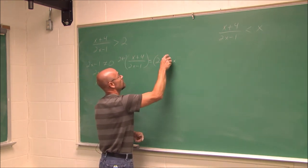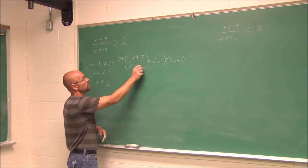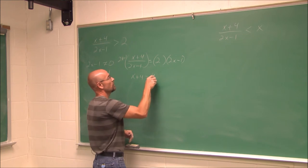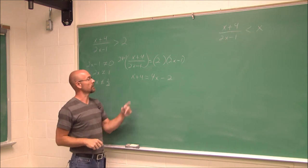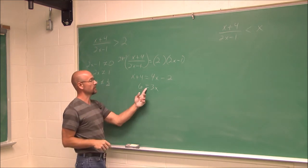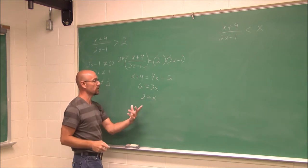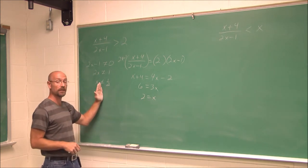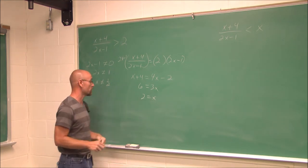What I do to one side I do to the other. If I multiply this side, this reduces to 1 — x plus 4 equals, and here I have to distribute: 4x minus 2. Now I can solve for x: subtract x from both sides and add 2, so I get 6 equals 3x. Divide by 3, I get x equals 2. This is the other critical point. So I have x cannot equal 1/2 and x equals 2.